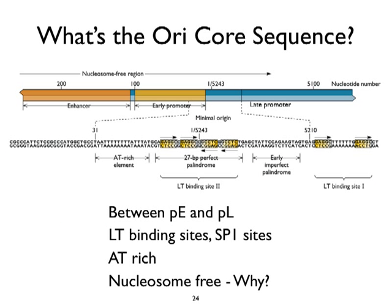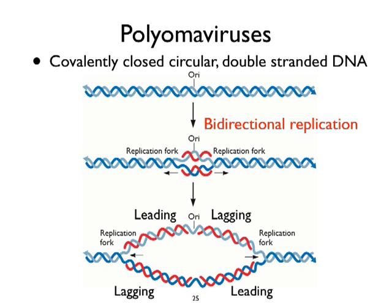The core sequence is a set of DNA elements forming a palindrome, positioned between an early and a late promoter — obvious points for regulation of early and late gene expression. The large T-antigen binding sites are contained right around these regions. The origin sequence is AT-rich and nucleosome-free to allow for accessibility.